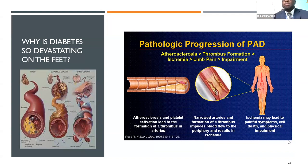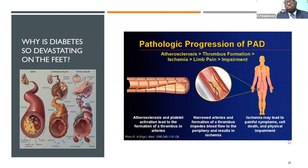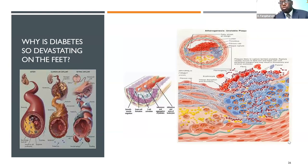Atherosclerosis starts developing in your early teenage years and takes years to build up to a point where it causes obstruction. Over time the vessels get narrowed, calcified, and the calcium ruptures causing a blood clot. This unstable ruptured plaque with cholesterol and platelets causes heart attacks, strokes, kidney disease, eye disease, and limb disease.